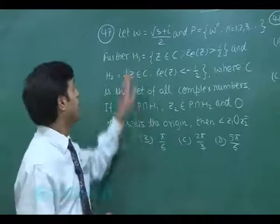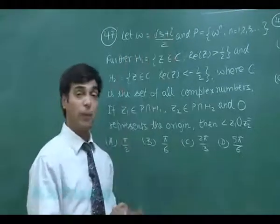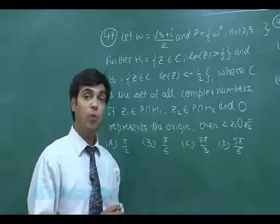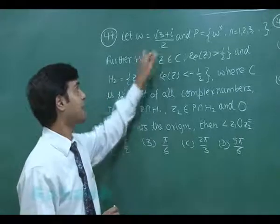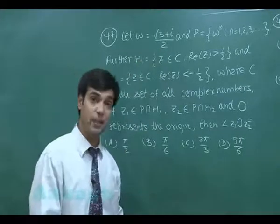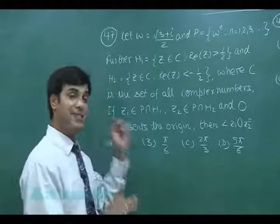Omega equals root 3 by 2 plus iota by 2. If I write it in polar form, I will read it simply as cos pi by 6 plus iota sin pi by 6, means omega to the 6th will become 1. It's a 6th root of unity.